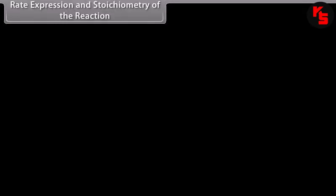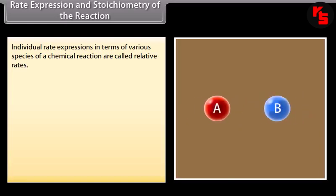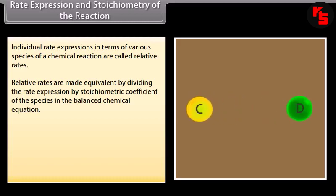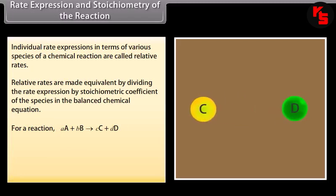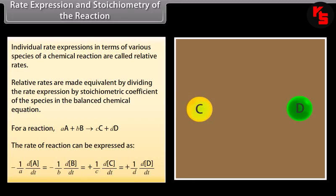Rate expression and stoichiometry of the reaction: individual rate expressions in terms of various species of a chemical reaction are called relative rates. Relative rates are made equivalent by dividing the rate expression by the stoichiometric coefficient of the species in the balanced chemical equation. For a reaction: aA + bB → cC + dD, the rate of a reaction can be expressed accordingly.